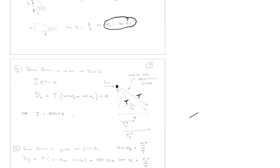We take vector T — one at point B and one at another point — and figure out the X component. T times cosine of alpha B gives the first vector, and T times cosine of alpha C gives the other. Because T is constant, we can pull it out and solve for T — so now we know the tension in the pulleys.